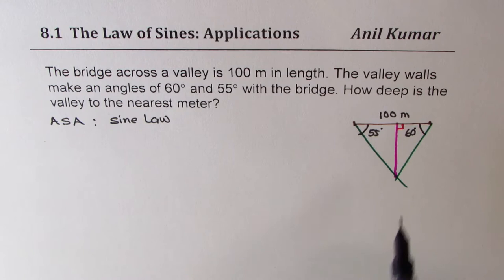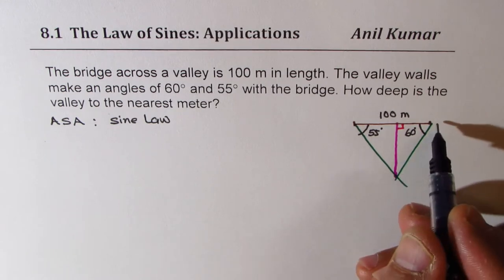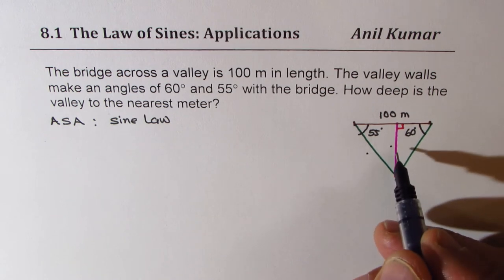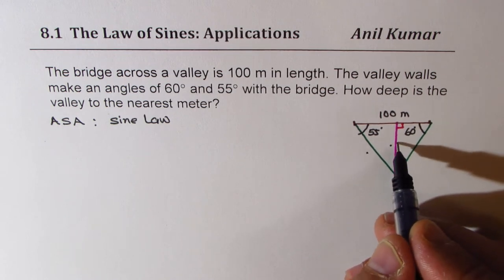So what we will do is we'll find one of the sides, you can find any one of these sides. Once you have a side, then we use sine ratio to find the height. Let's say height is h.